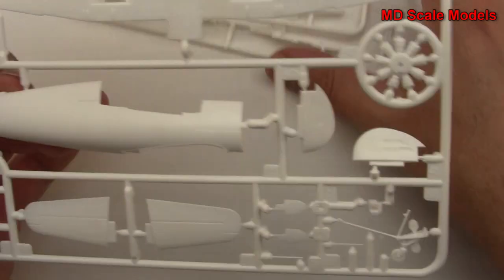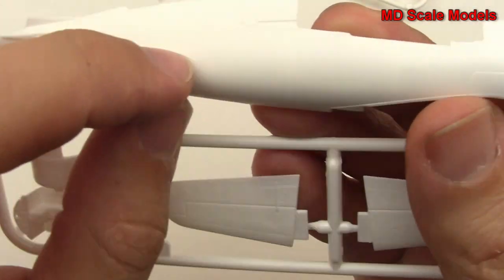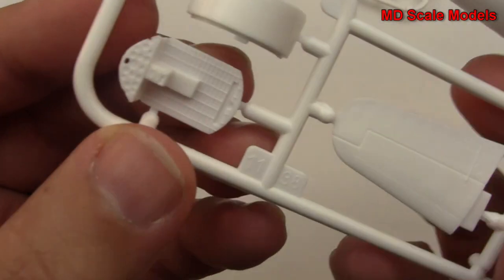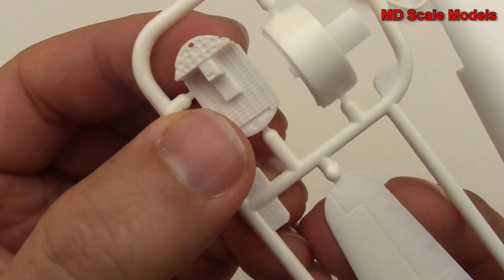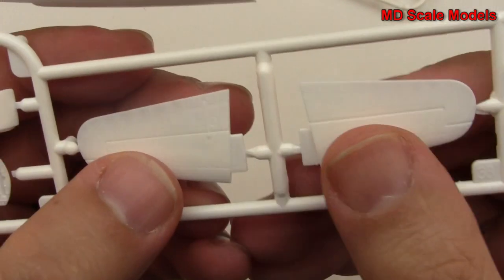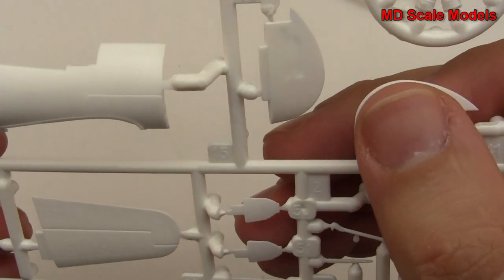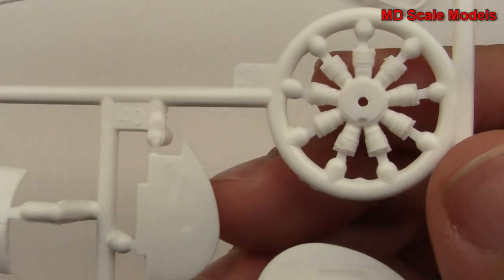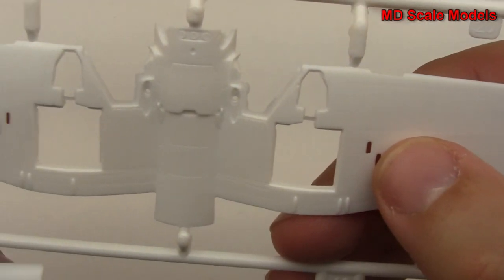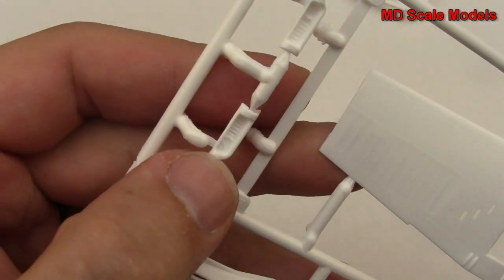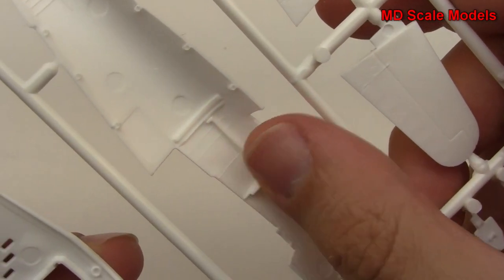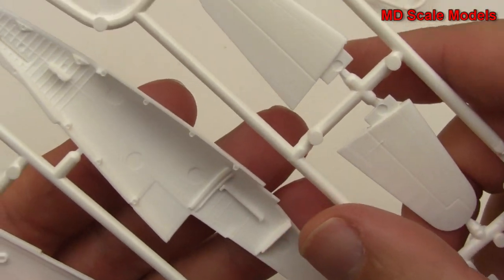Over here we have our right fuselage. We've got some recessed panel lines and it looks like that's our instrument panel there and part of the cockpit. Here's our elevator and wing tips. We've got our engine with some nice detail there. This is the underside of the wing with the gun ports already cut out, the radiator intakes. Not really any detail on the inside of this fuselage.